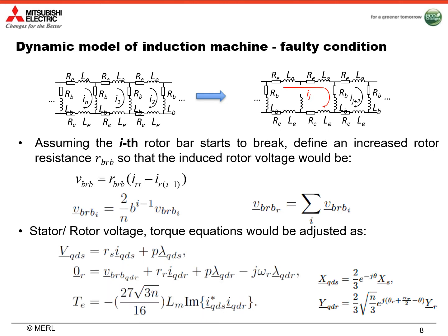In faulty condition, the dynamic model of induction machine needs to be changed accordingly. Let's assume the k-th rotor bar starts to break. We define an increased rotor resistance such that the induced rotor voltage can be expressed using this equation. Accordingly, the stator voltage, rotor voltage, and torque equations would be adjusted as shown in the following equations.